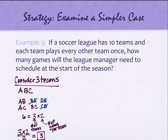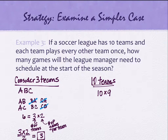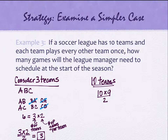So if I have ten teams, I don't want to write out A, B, C, D, and so forth ten times. Instead, it would be ten times nine — ten teams, each playing nine opposing teams. Then divide by two to remove the double counts, same as with three teams. Ten times nine divided by two gives us 45 games.